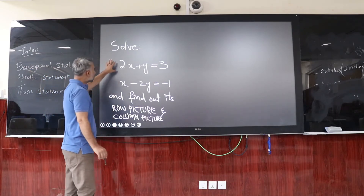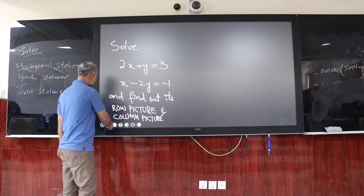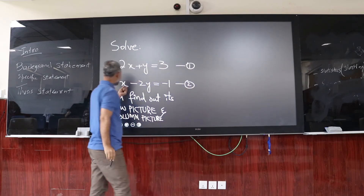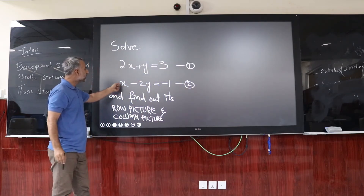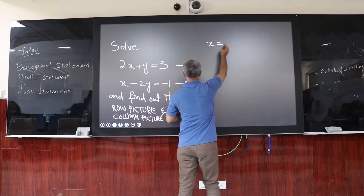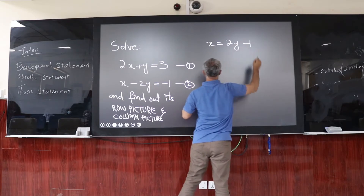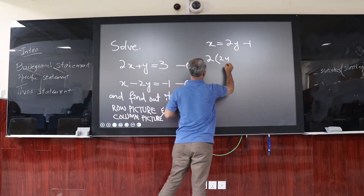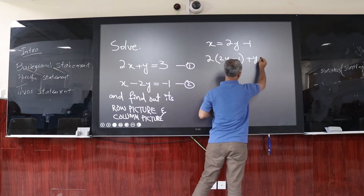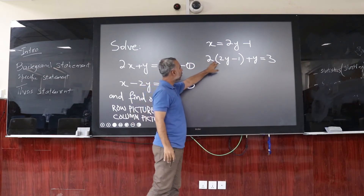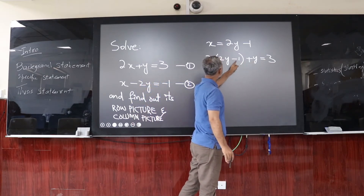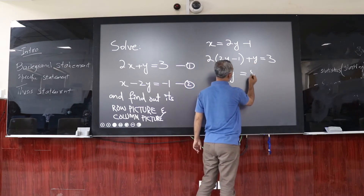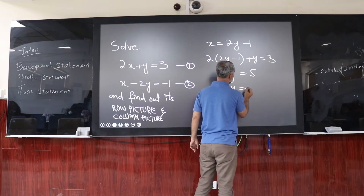For the first solution, we have equation 1 and equation 2. By considering the value of x from equation 2, x becomes 2y minus 1. Substituting this value of x into equation 1, after multiplication we get 4y, then this y becomes 5y, and the minus 2 becomes 5 on the other side. So we get 5y equals 5, or simply y equals 1.